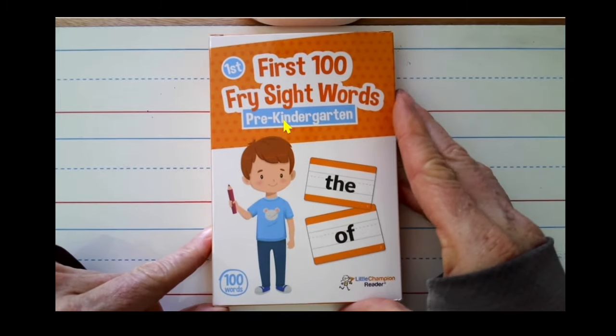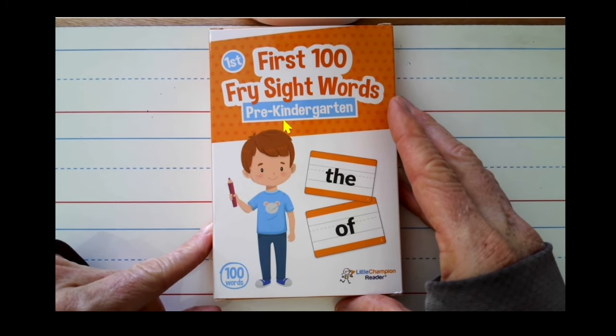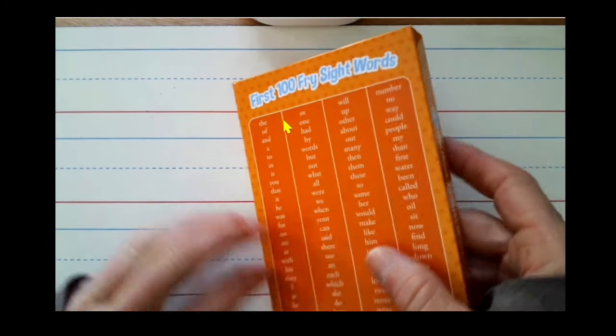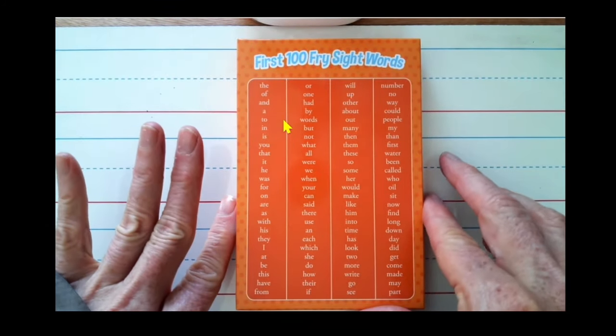So here's the first 100 Fry sight words. When you turn it over, you can see all of the words in the box right here.